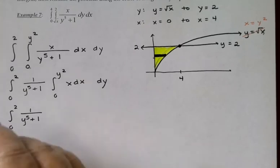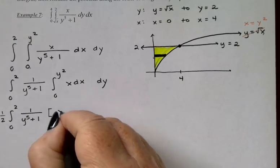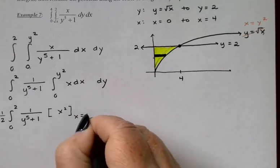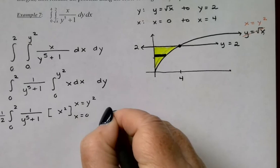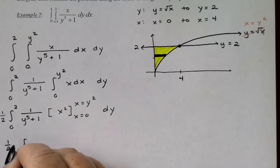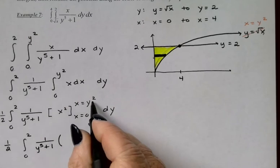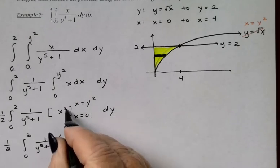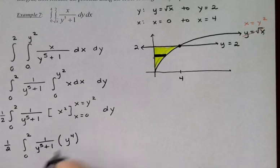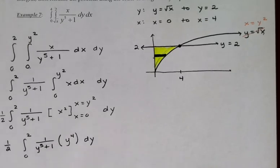Integrating that, of course, is going to give me 1 half x squared. I'm going to choose to pull the 1 half out front and just leave the x squared in here from x equals 0 to x equals y squared. And so I have 1 half integral from 0 to 2 of 1 over y to the fifth plus 1 times, plugging a y squared in there, y squared squared is going to be y to the fourth. And I can see that when I plug in x equals 0, it'll just give me 0. So I won't bother writing that part out.